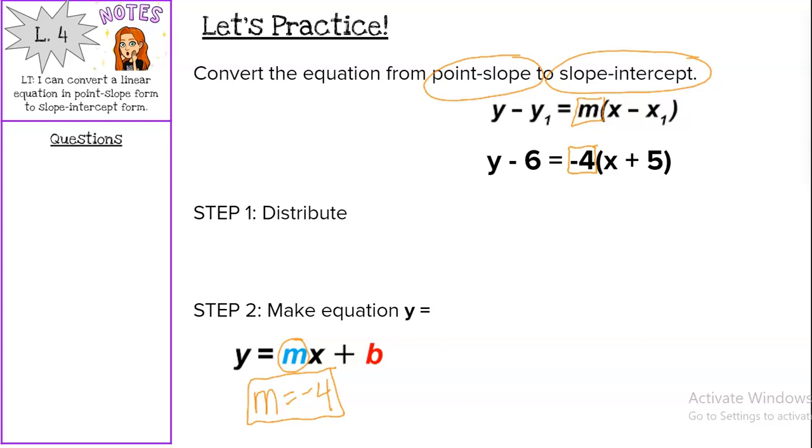So to make this equation in point-slope form look like slope-intercept form, step one is to distribute. So distribute, remember, just means get rid of those parentheses by multiplying. So we're going to take our slope, that negative 4, and we are going to multiply it by the two numbers inside the parentheses.